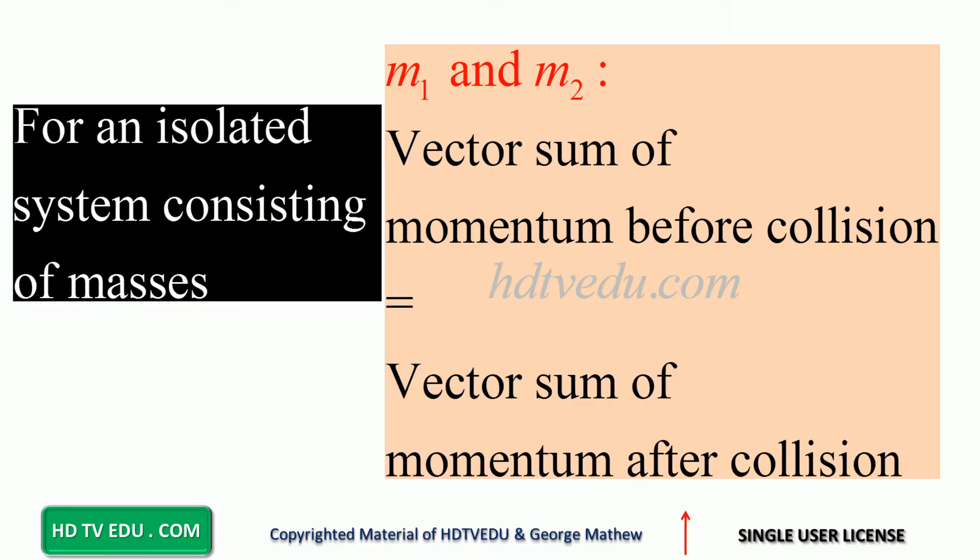For an isolated system consisting of masses m1 and m2, vector sum of momentum before collision equals vector sum of momentum after collision.